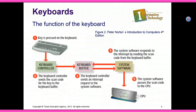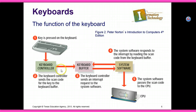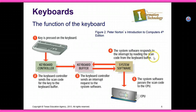The function of a keyboard: First, a key is pressed on the keyboard. Then the keyboard controller sends the scan code for the key to the keyboard buffer. The keyboard controller sends an interrupt request to the system software. The system software responds to the interrupt by reading the scan code from the keyboard buffer. The system software then passes the scan code to the CPU.